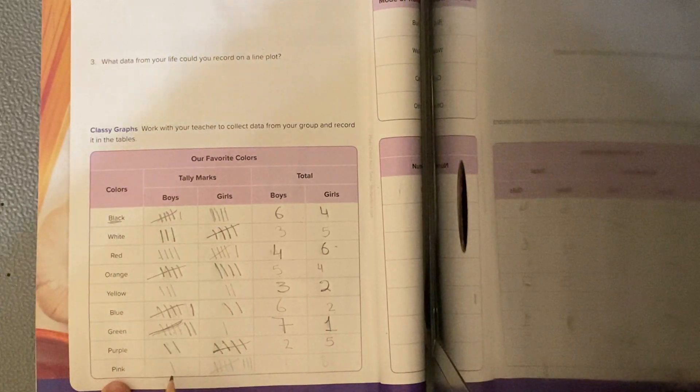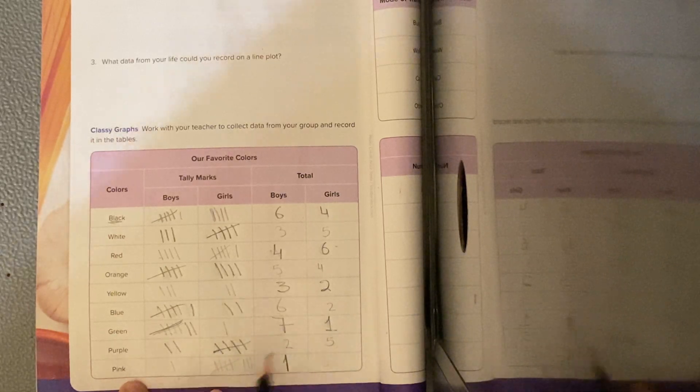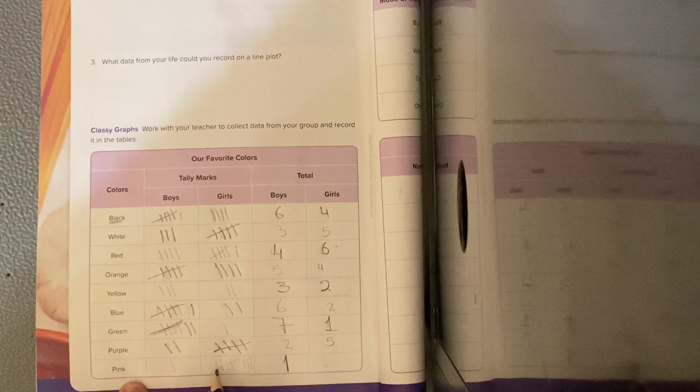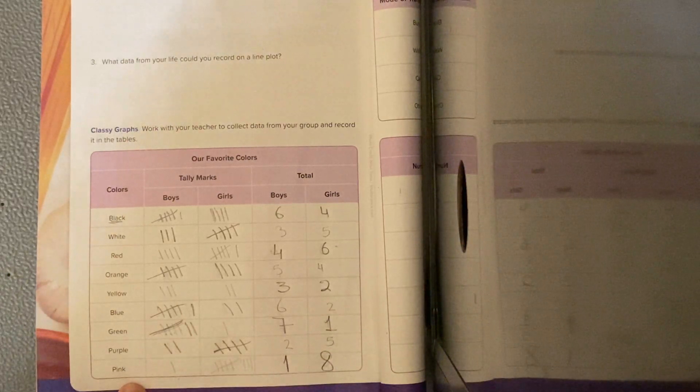The last one. How many boys like pink color? Only one tally. And how many girls like pink color? 5 and 3 equals 8. 1, 2, 3, 5, 6, 7, 8.